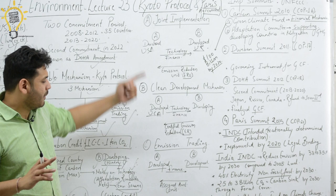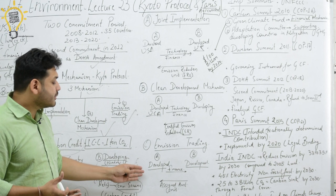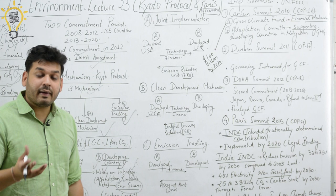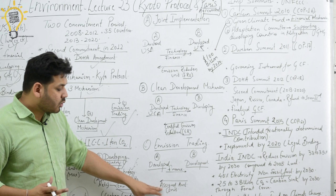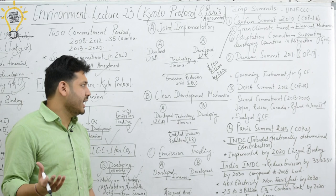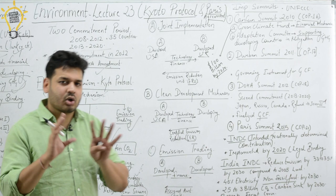The third mechanism is Emissions Trading. Here only money (finance) is provided — no technology transfer. The developed country promotes green energy and in return receives Assigned Amount Units (AAUs) as carbon credits. So to summarize: Joint Implementation is developed-to-developed, CDM is developed-to-developing, and Emissions Trading involves AAUs.